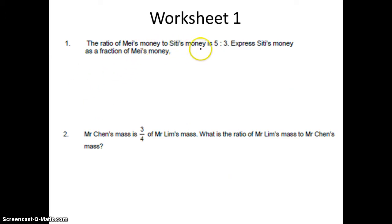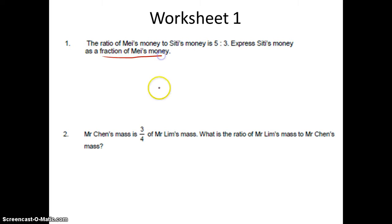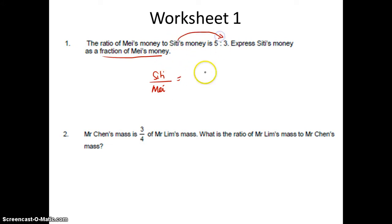Ratio of May's money to City's money is 5 is to 3. Express City's money as a fraction of May's money. So May is at the denominator. City's money is 3 units and May is 5 units. So the answer is 3 fifths.